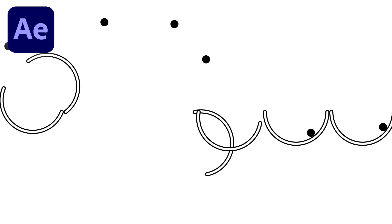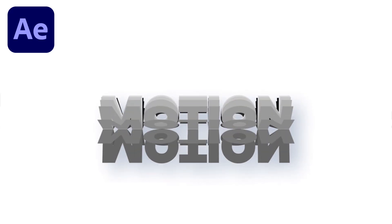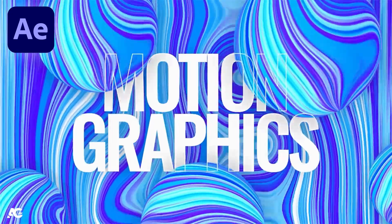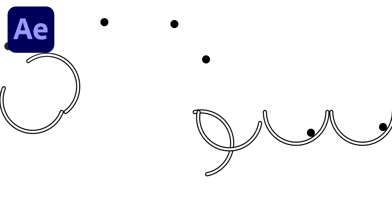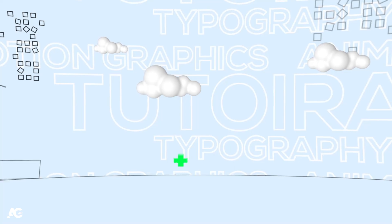Hey guys, welcome back to my channel EG Motion Designs. In today's video we are going to create a looping animation inside of After Effects without using any third-party plugin, but with the help of simple tips and tricks. If you want to learn more about logo animation and motion graphics, check out my Udemy courses — links are in the description. If you're new, please subscribe and hit the bell icon. Let's get started.